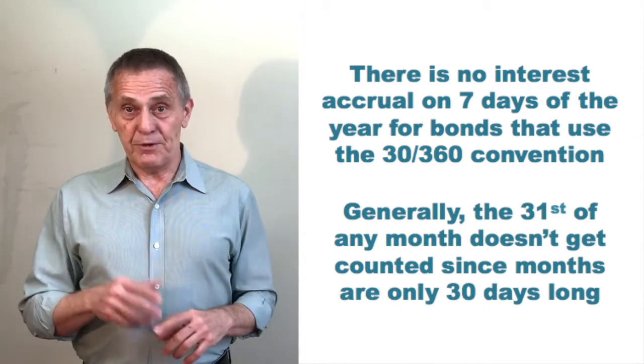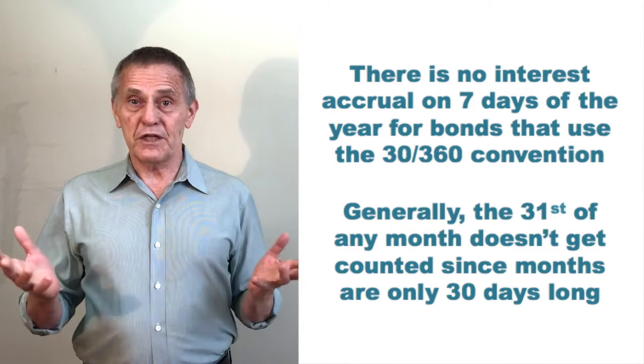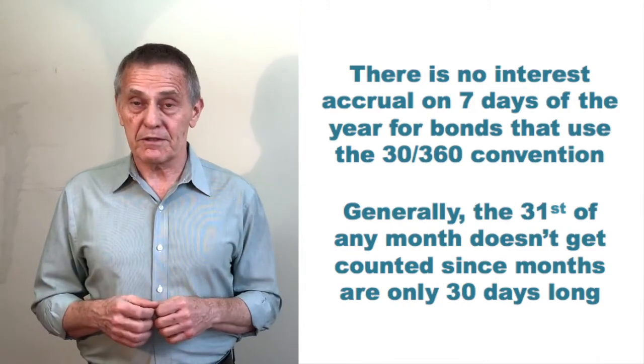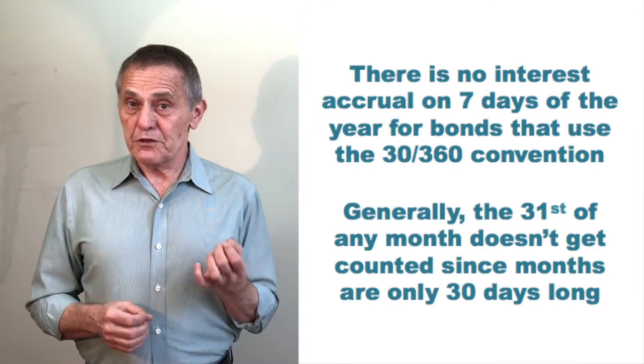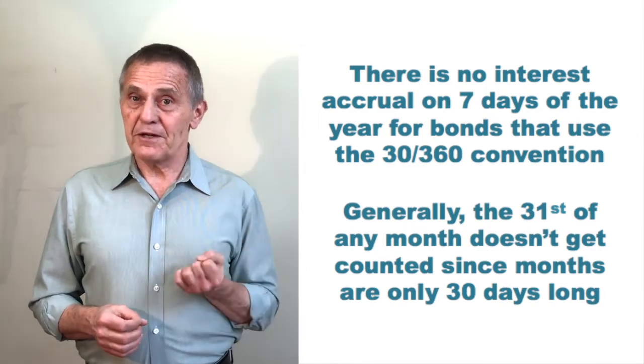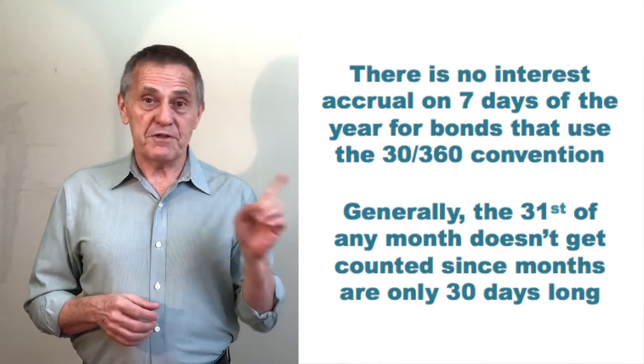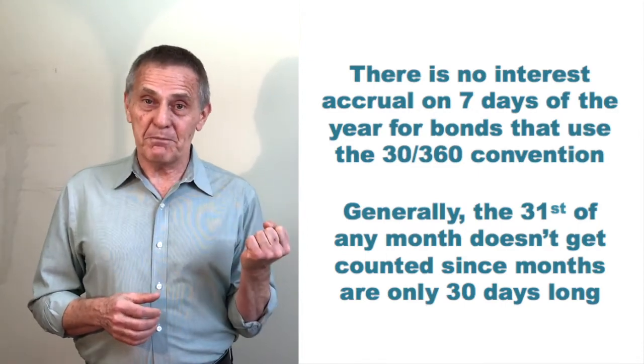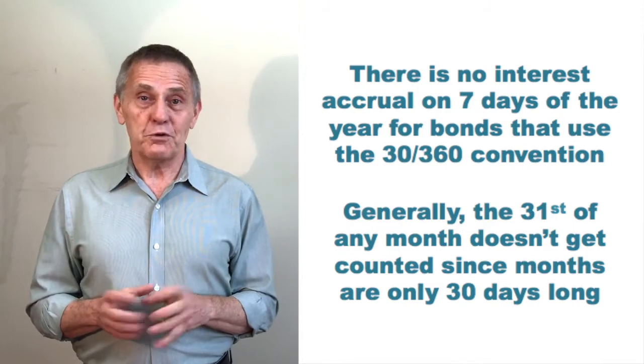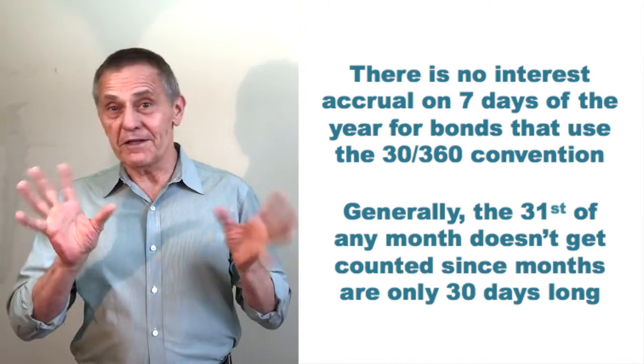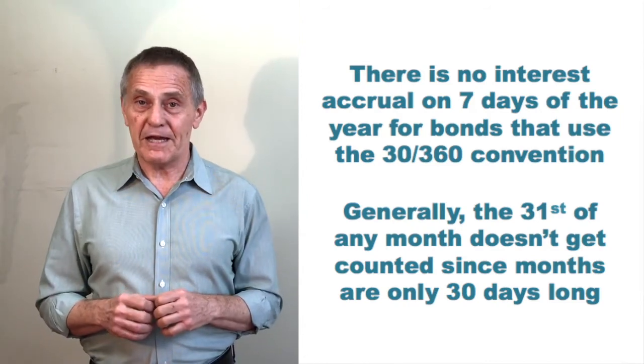So, similar to the last example, now consider the days of accrued interest will earn for a bond being sold near the end of the month of August. How many days of accrued interest does the seller get if the trade settles on the 31st of August? Well, they get 30, of course. But what happens if the trade settles one day later on September 1st? The seller still only gets 30 days of accrued interest for the month of August because there isn't a 31st of the month, at least in the 30/360 day count convention.